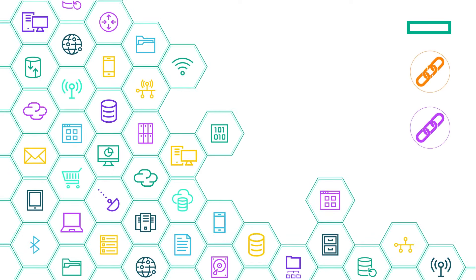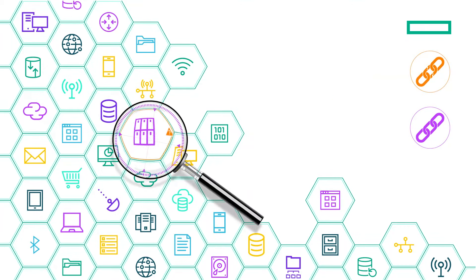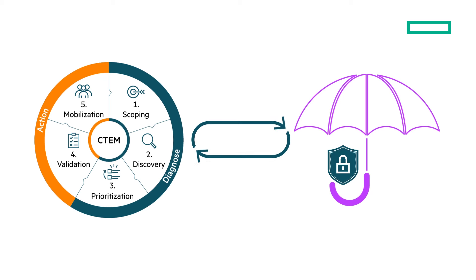CTEM conducts ongoing assessments of an organization's ecosystem, including networks, systems, and assets, to uncover and address weaknesses, preventing potential exploitation. By adopting CTEM, organizations enhance their security posture by continuously identifying and mitigating risks preemptively. The continuous aspect of CTEM emphasizes a perpetual information exchange between the CTEM program and risk remediation efforts. This dynamic process facilitates optimal decision-making and managing exposure risks.